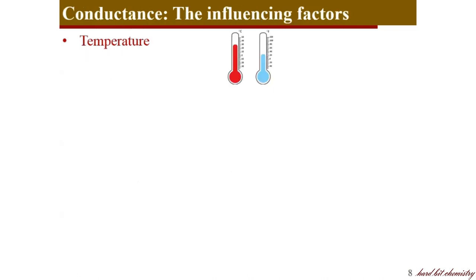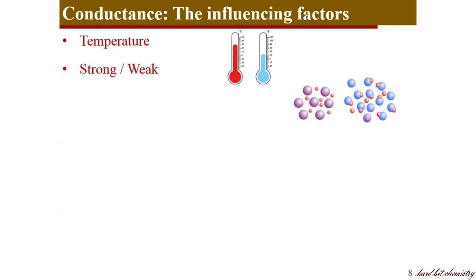Now we will see the different factors determining the conductance of a given electrolyte. Obviously we have temperature — when temperature increases, the movement or mobility of particles inside the electrolyte may be affected, normally causing an increase in conductance because mobility of ions increases with temperature. Then there is the nature of the electrolyte, whether it is strong or weak — strong electrolytes dissociate completely but weak electrolytes do not.